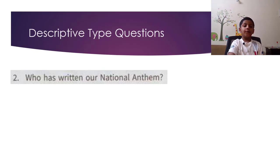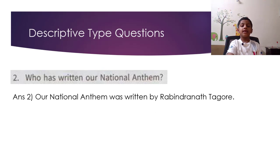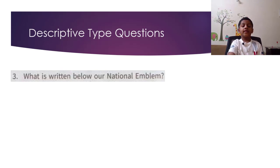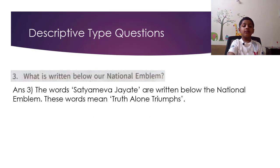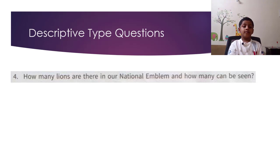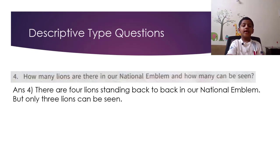Question 2: Who has written our national anthem? Answer: Our national anthem was written by Rabindranath Tagore. Question 3: What is written below our national emblem? Answer: The words Satyameva Jayate are written below the national emblem, meaning truth alone triumphs. Question 4: How many lions are there in our national emblem and how many can be seen? Answer: There are four lions standing back to back in our national emblem, but only three lions can be seen.